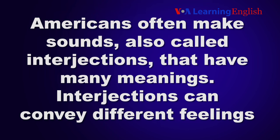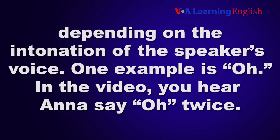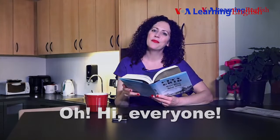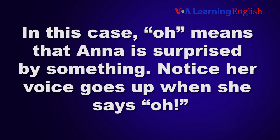Americans often make sounds, also called interjections, that have many meanings. Interjections can convey different feelings depending on the intonation of the speaker's voice. One example is O. In the video, you hear Anna say O twice. The first time she says O is at the beginning of the video: "Oh, hi everyone!" In this case, O means that Anna is surprised by something.